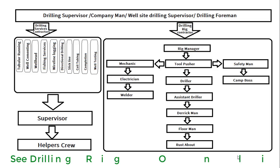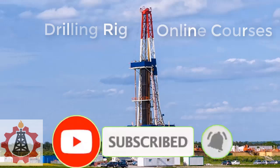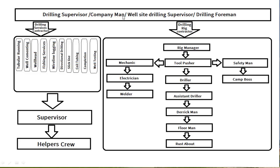This is a drilling rig hierarchy chart. On the drilling rig site or on the well site, the commander of this site is the drilling supervisor. This is the top most rank on the drilling rig. The drilling supervisor is also called company man, well site drilling supervisor, or drilling foreman.